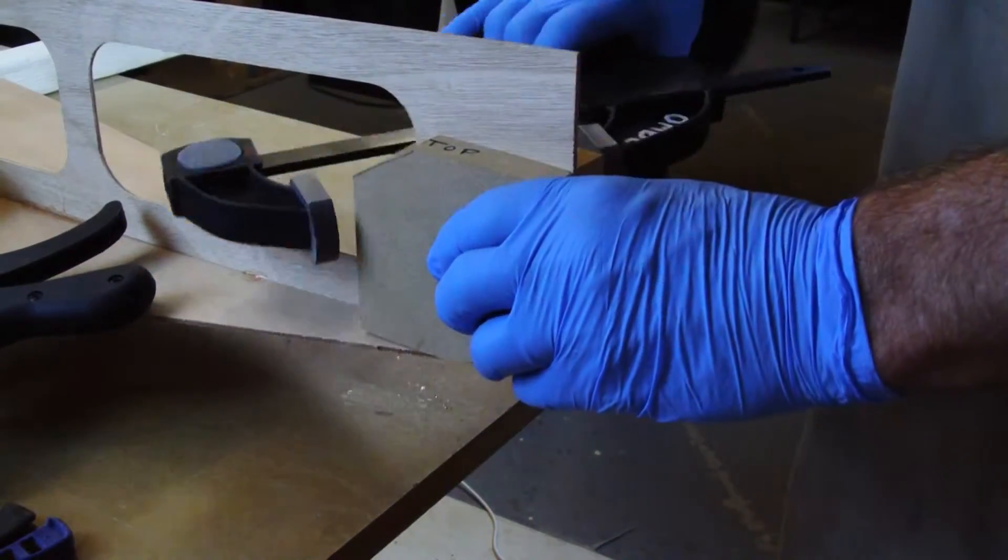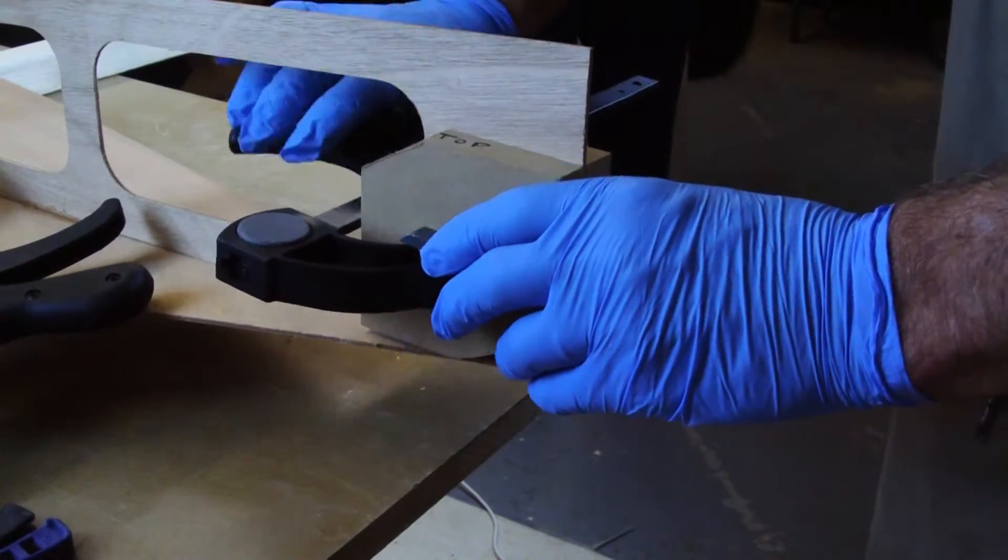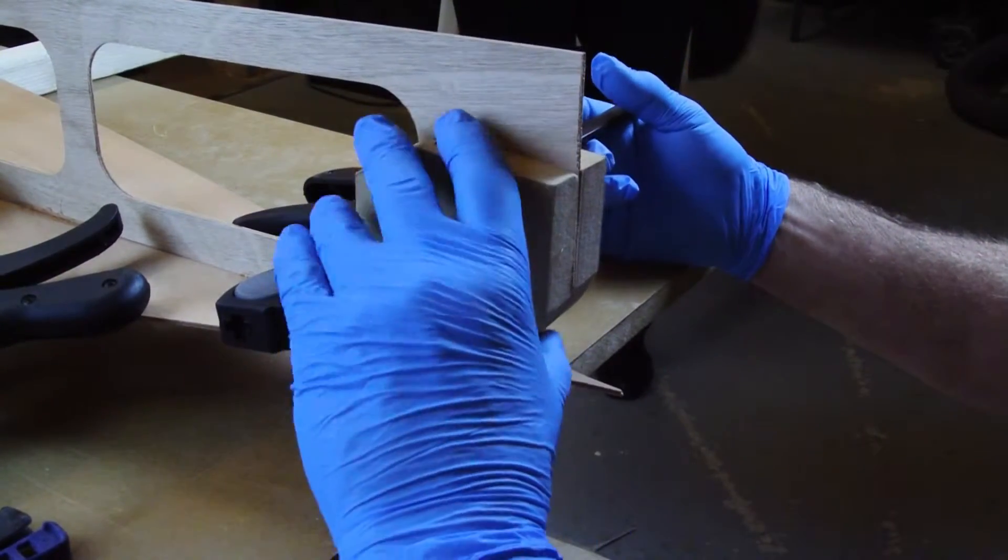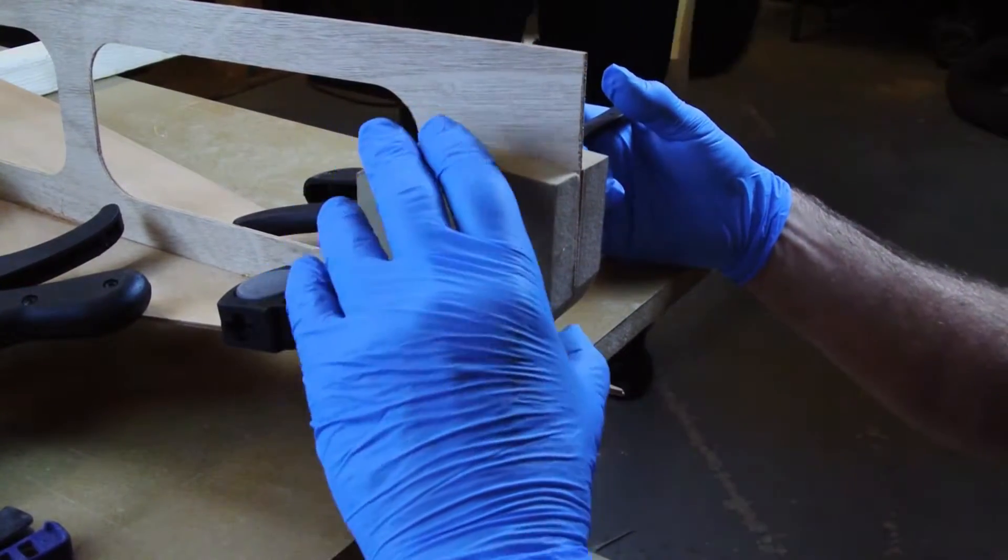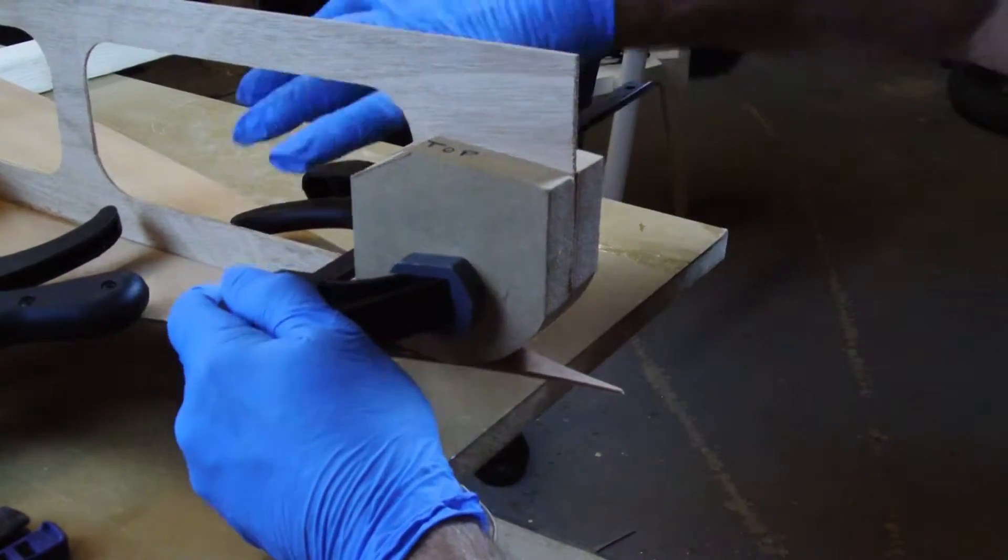You'll remove the blocks once the bow tip is dried. The blocks are marked top to help you place them in the correct position. You can use a single bar clamp to hold them. Just make sure that the front face of the blocks matches the shape of the bow curve.